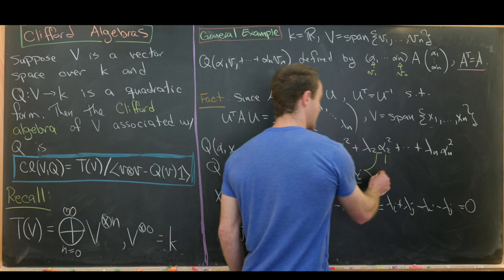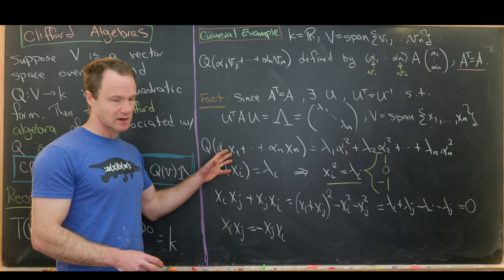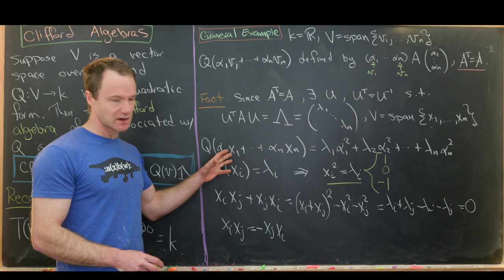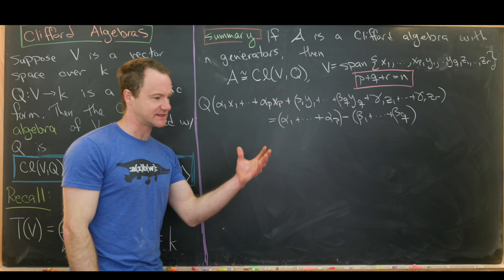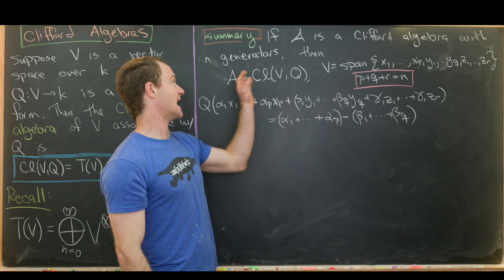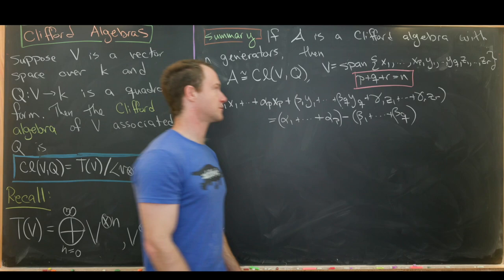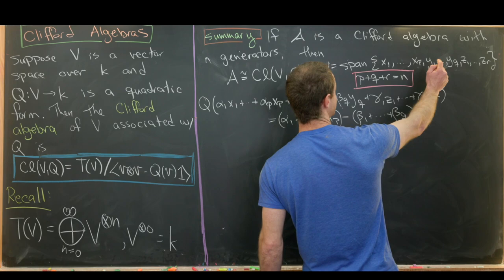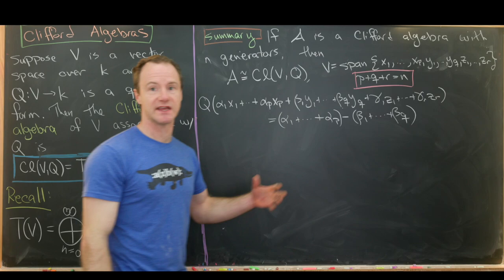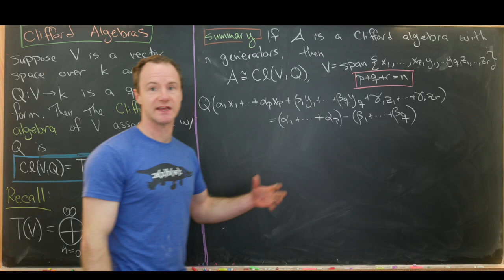Keeping that in mind, we can summarize what we've seen pretty easily. If A is a Clifford algebra with n generators — meaning the vector space is n-dimensional — then A is isomorphic to CL(V,Q), where V is that n-dimensional vector space and Q is the quadratic form. We write V as the span of vectors x₁ to xₚ, y₁ to yq, and z₁ to zᵣ, where p + q + r = n.